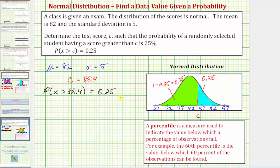So going back to our distribution, we just found the value of c here is approximately 85.4, where 25% of the scores are above 85.4, and 75% of the scores are below 85.4. So this is our answer, but before we go, I also want to talk about percentile.